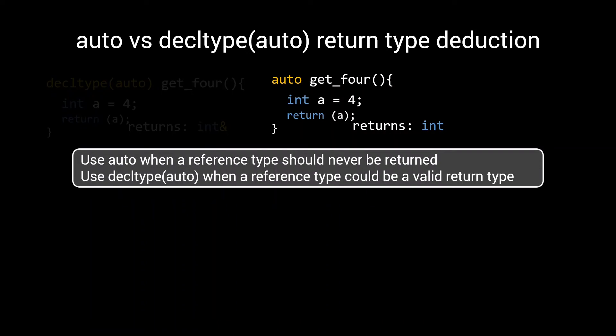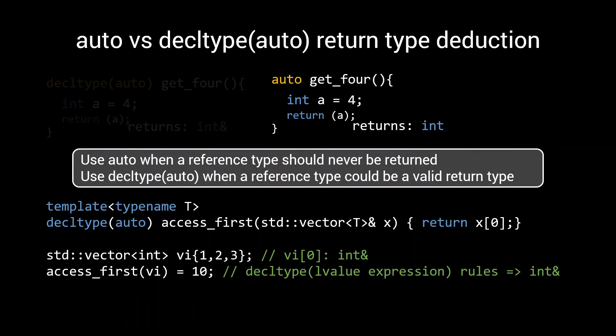A good use case for using decltype auto is when writing accessors. This accessFirst function, for example, which can be used to access the first element of a vector. It works correctly when used with a vector of int, as the subscript operator of vector of int returns a reference to int. This is an lvalue expression, and hence the deduced return type for our accessFirst is also a reference to int.